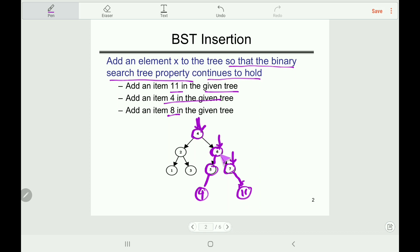Now insert another item: 8. Compare with 4 — 8 is larger, so move right. Compare with 6 — 8 is larger, so move right again. Compare with 7 — 8 is larger, so insert 8 as the right child of 7. I think all of you now understand BST insertion.